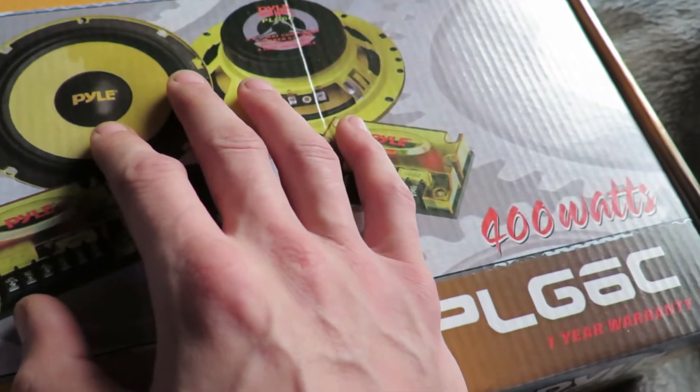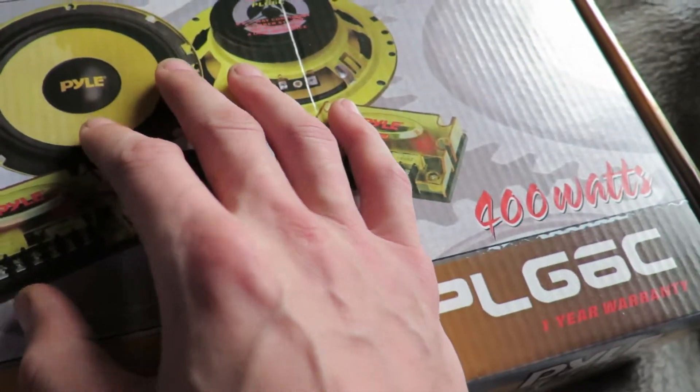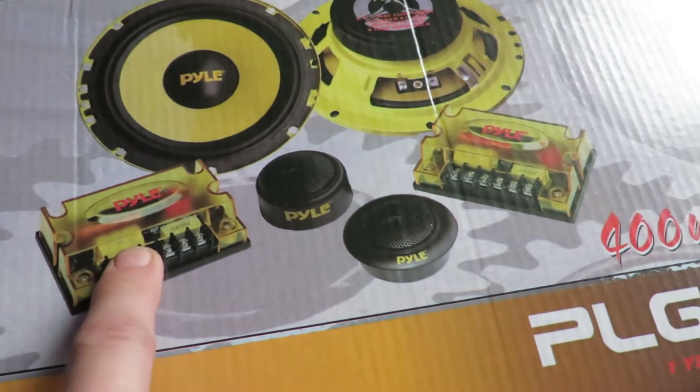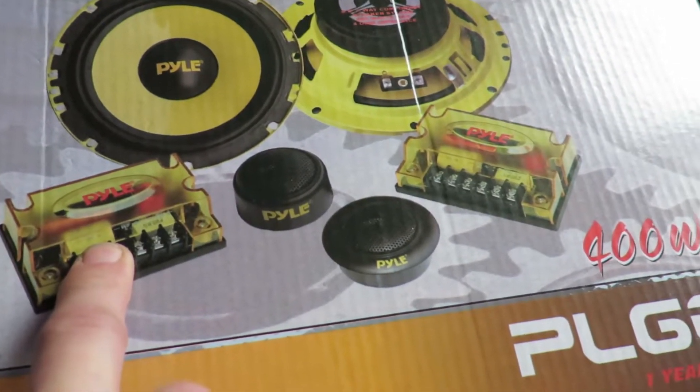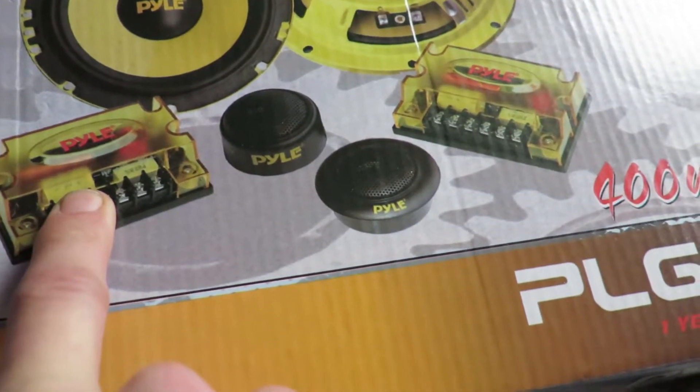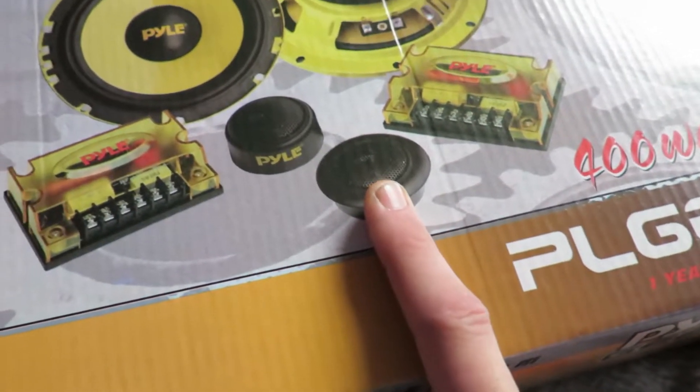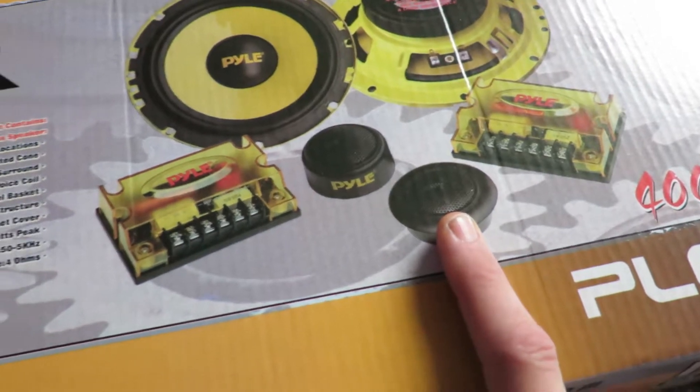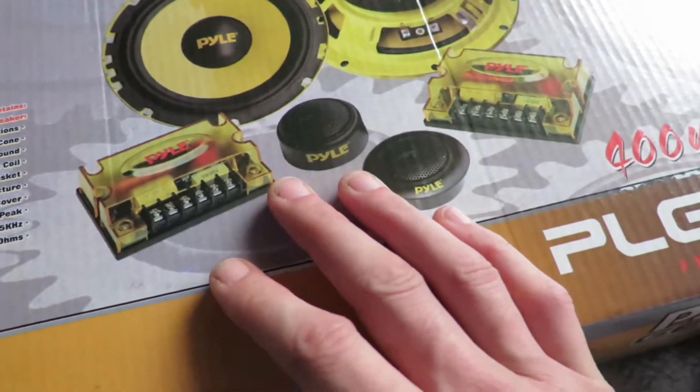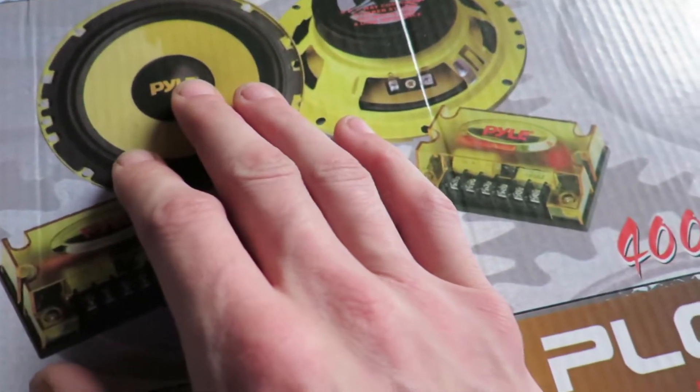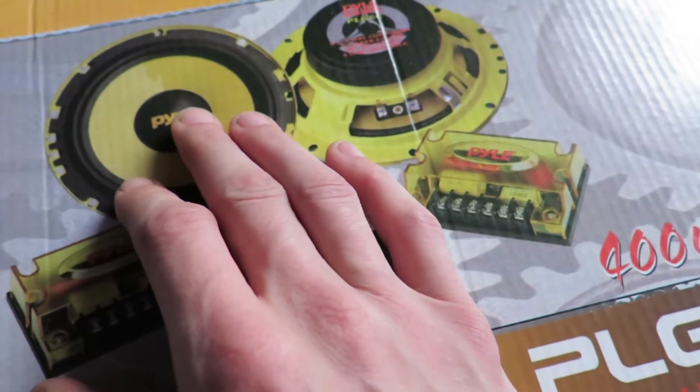And I never used the crossovers because I don't have an amp in my car. But I did use the tweeters and they worked pretty well, so I thought I'd go with these again. And again, these are the 6x5s.